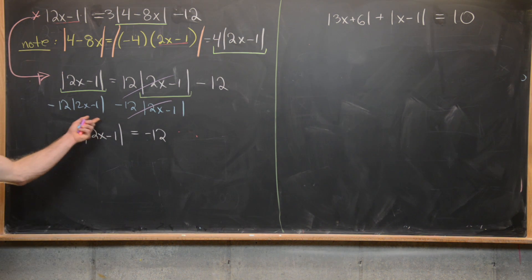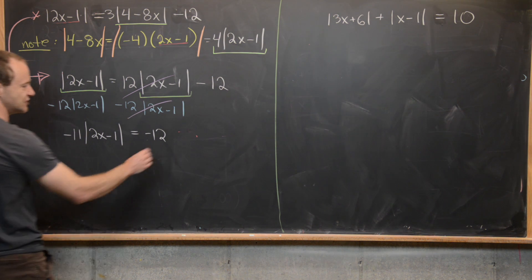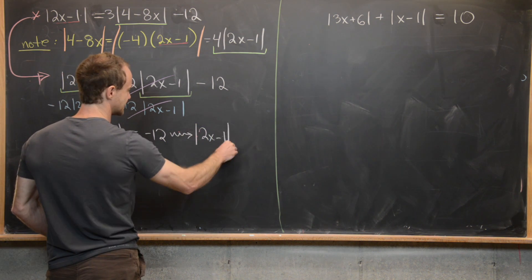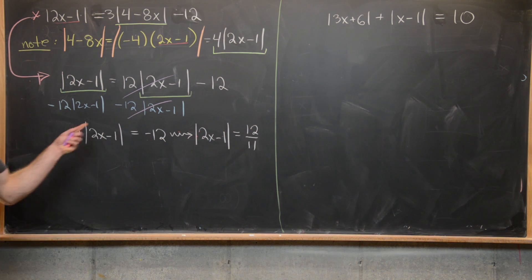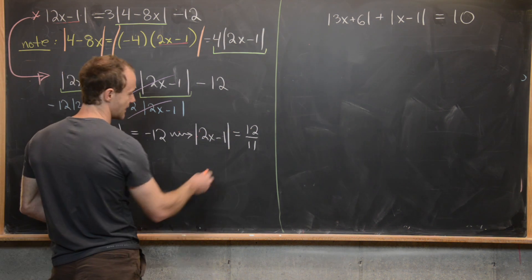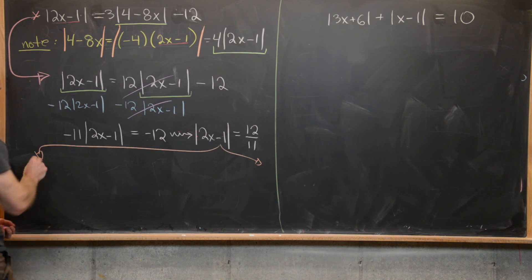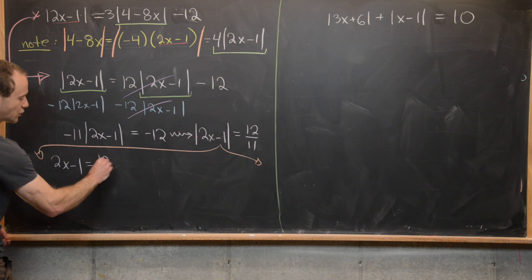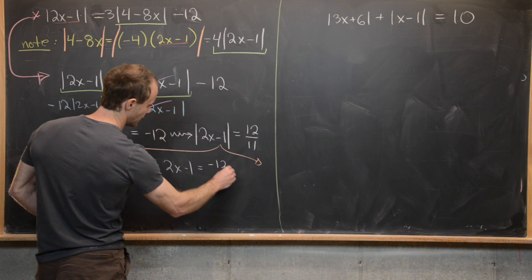We're trying to get this absolute value of 2x minus 1 term by itself, so we divide both sides by negative 11. That gives us the absolute value of 2x minus 1 equals 12 over 11 — the minus signs cancel. Now we can use the fact that an absolute value equation splits into two equations with an 'or' between them: 2x minus 1 equals 12 over 11, or 2x minus 1 equals negative 12 over 11.